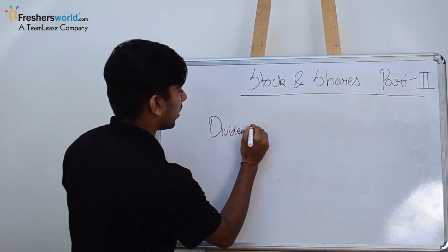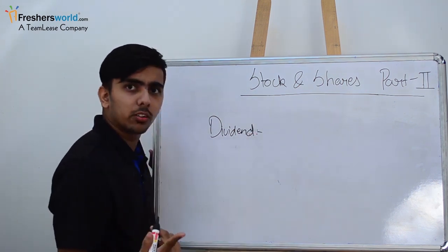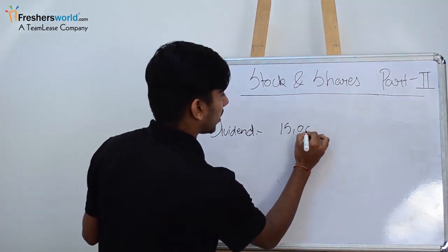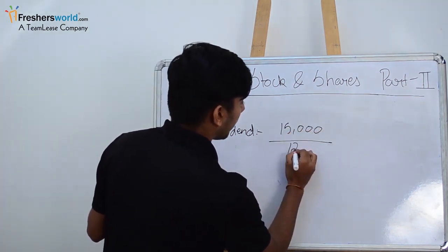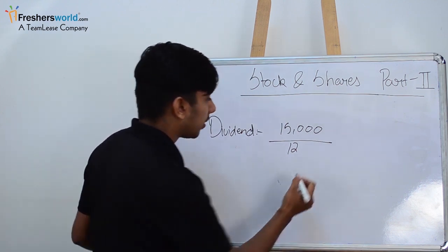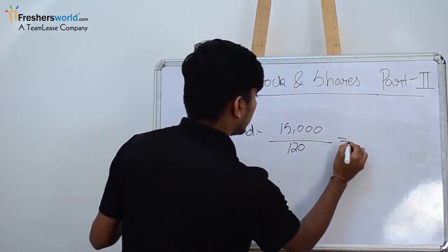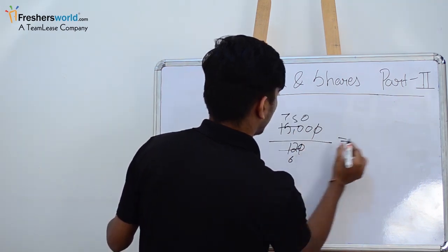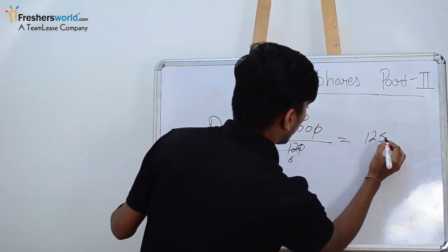For dividend, let's find out how many number of shares are there. You have invested 15,000 and one share is 120 per share, so we'll get 125 shares we have purchased.